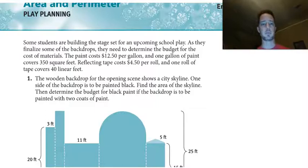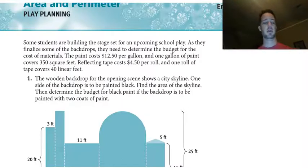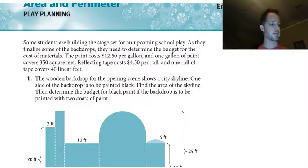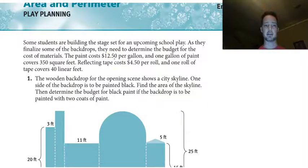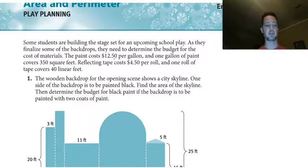Hello and welcome to Unit 5 Embedded Assessment 1. This is over area — composite area of some basic geometric shapes as well as regular polygons and sectors of circles. Let's go ahead and get started. Hopefully you've already attempted this so we can check your work and go over any questions you have.